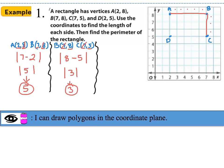Let's find the distance from point C to point D. We can count five boxes between them. Using coordinates: the y-coordinates are both 5, so we ignore those and find the absolute value difference of the x-coordinates: |7 − 2| = 5. The distance from C to D is 5.